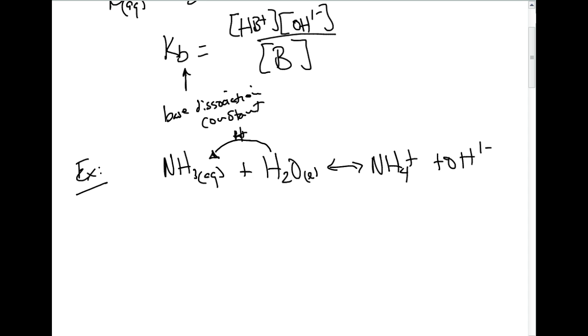We could write our base dissociation constant here of KB equals the ammonium ion multiplied by our hydroxide ion all over ammonia, and we could look up in the appendix the value, which is 1.8 times 10 to the negative 5th, which is surprisingly the same value as the KA for acetic acid, although there's no relation between those two.